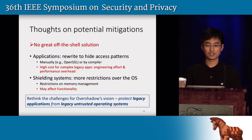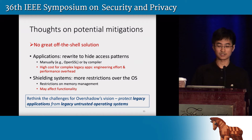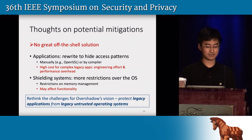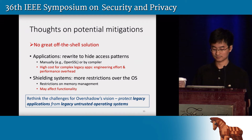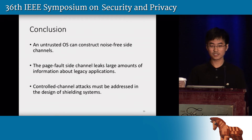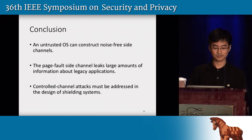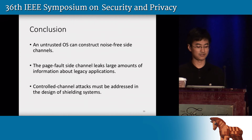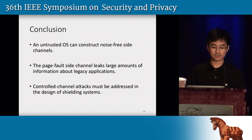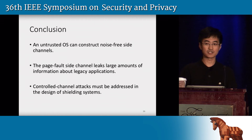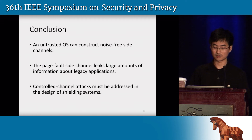With these difficulties, I'd encourage the community to rethink the challenges for Overshadow's initial vision, which is to protect legacy applications from legacy untrusted operating systems. In conclusion, an untrusted operating system can construct noise-free side channels for applications running inside it. The page-fault side channel leaks large amounts of information about legacy applications. For this reason, controlled channel attacks must be addressed in the design of future shielding systems. Thank you.